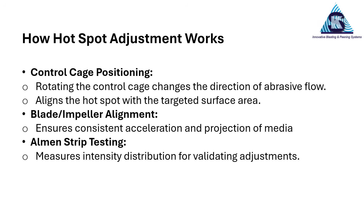How Hotspot Adjustment Works. Control cage positioning: rotating the control cage changes the direction of abrasive flow and aligns the hotspot with the targeted surface area. Blade and impeller alignment ensures consistent acceleration and projection of media. Almen strip testing measures intensity distribution for validating adjustments.